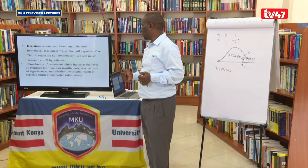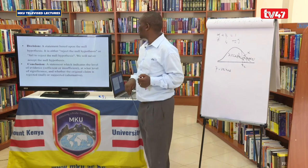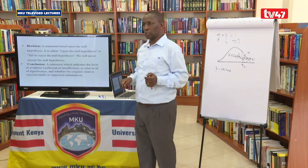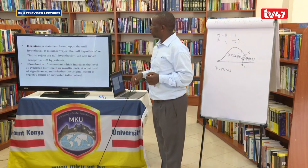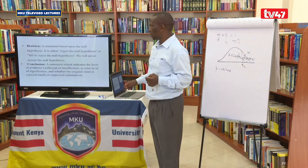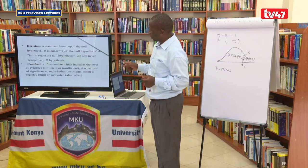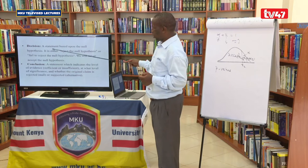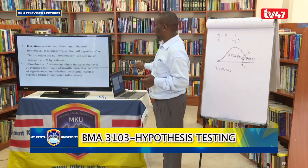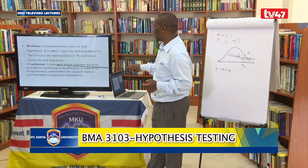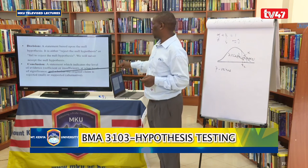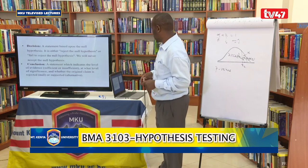The decision is a statement based on the null hypothesis — either reject the null hypothesis or fail to reject it — and we go ahead and make the managerial decision. Research is about the decision we wanted to make, which is why we collect data. We make a managerial statement regarding the hypothesis testing, indicating the level of evidence — sufficient or insufficient — at what significance level, and whether the original claim is rejected or supported.